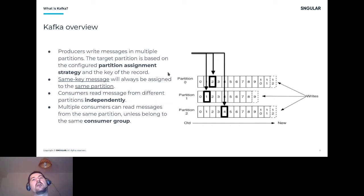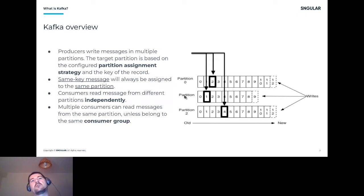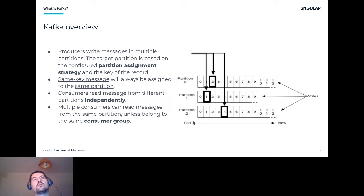For example, if you are partitioning data by user ID, you have the guarantee that every change for a user with ID 123 will always be assigned to the same partition. This means changes for that user will remain sorted — they will remain in the order that the data was produced. This is a good guarantee for consumers reading data in order.